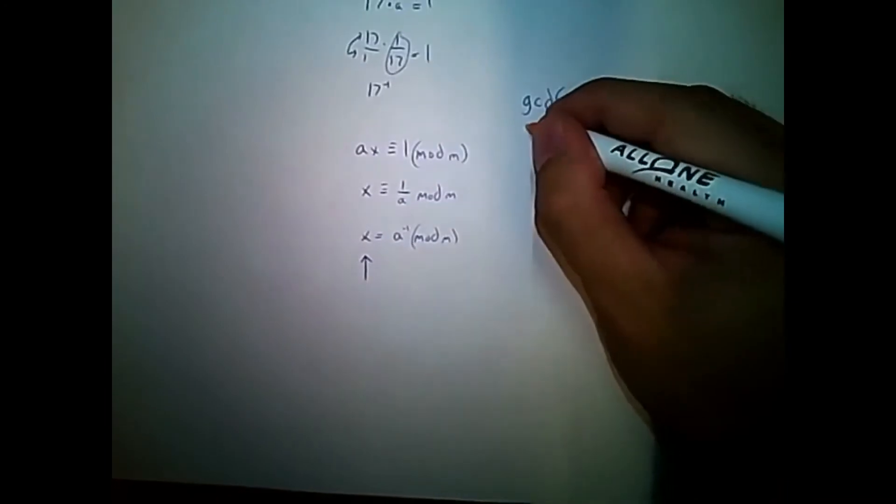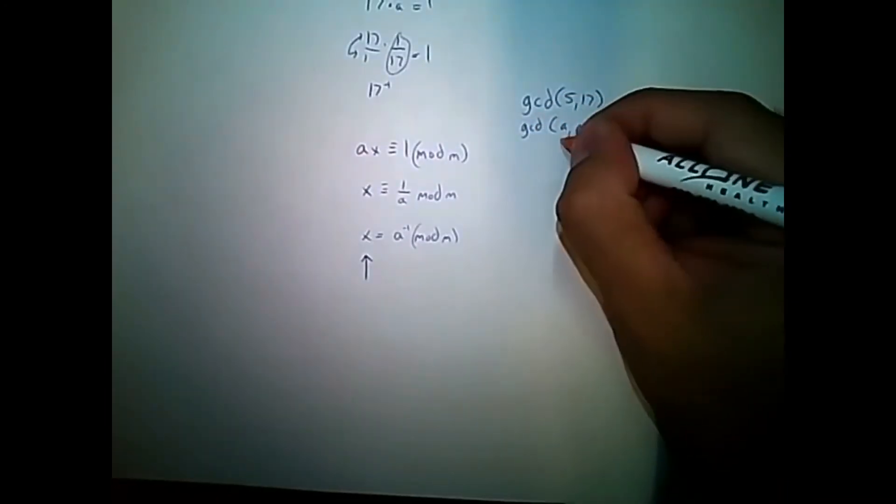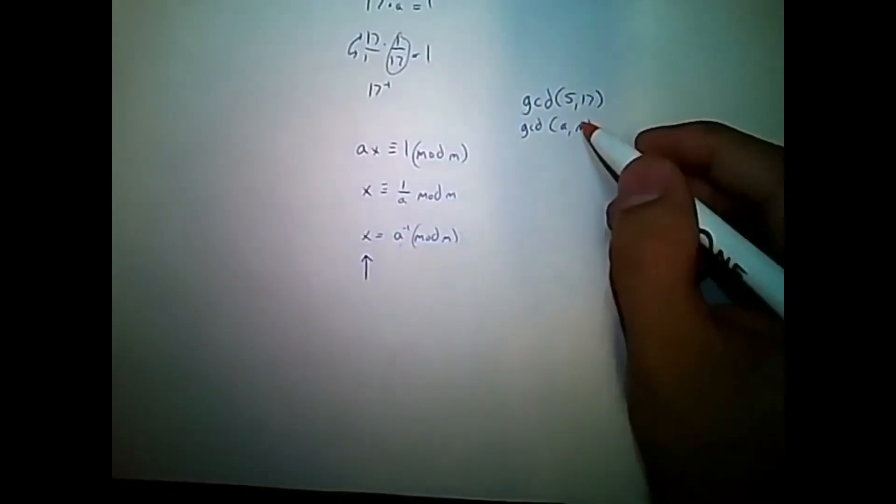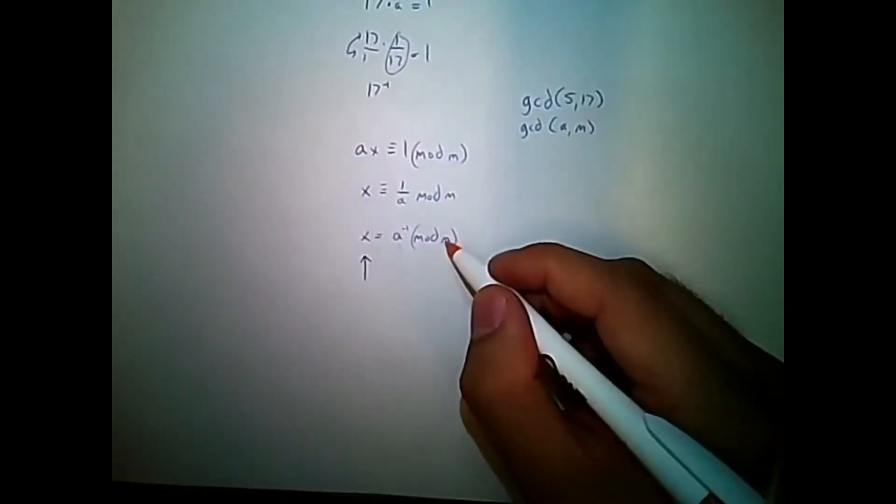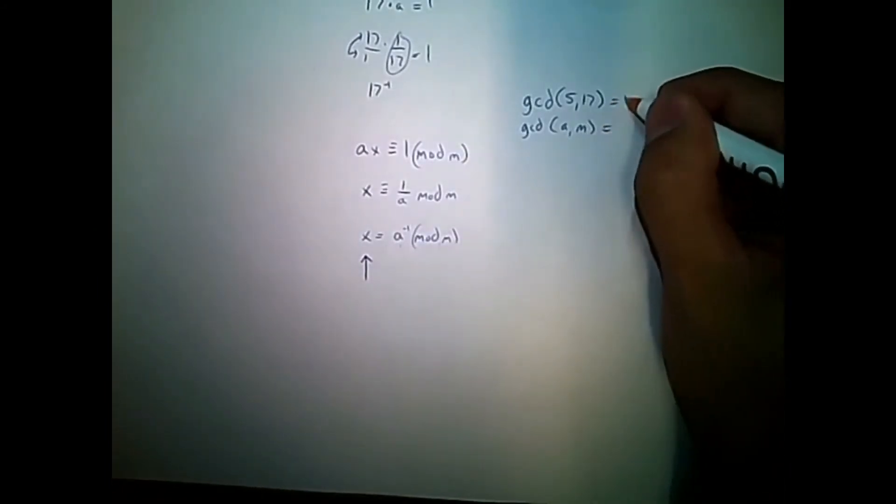And what those numbers are in the equation: GCD, a, and m. So a from here is this a, and m, our modulo, is over here. And remember, this needs to equal 1.